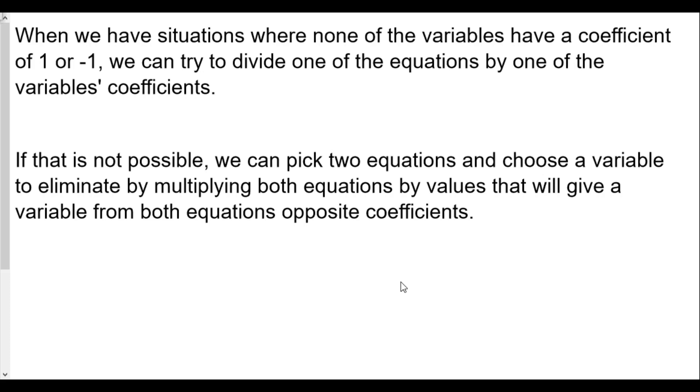If that's not possible, then we can pick two equations and choose a variable to eliminate by multiplying both equations by values that will give a variable from both equations opposite coefficients. We'll multiply each of those equations by a particular value to get the least common multiple that are opposite values, and we'll repeat the process again with another pair of equations.